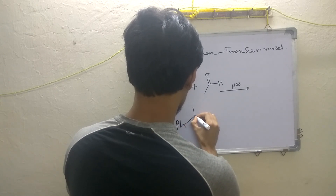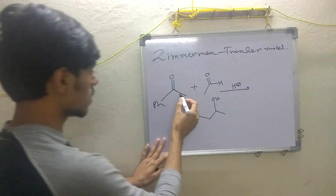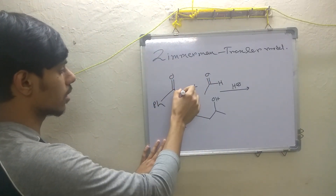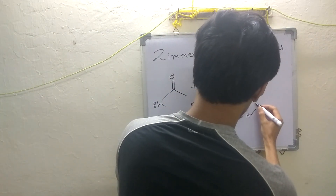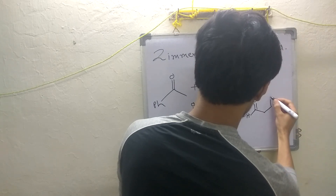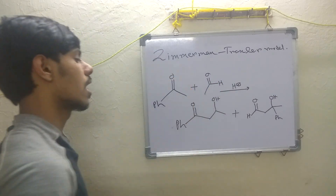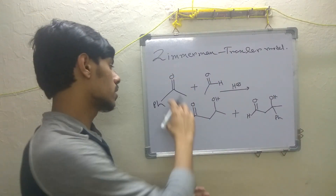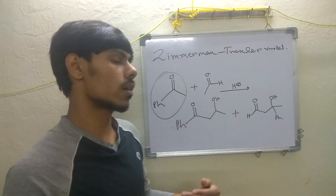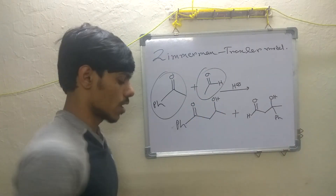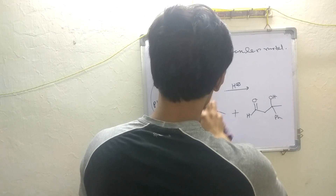The mixture arises because each component can enolize and add onto the other, giving self-aldol products as well as cross-aldol products. So you will get a mixture of products. To avoid this, you have to do something to make your aldol reaction selective.